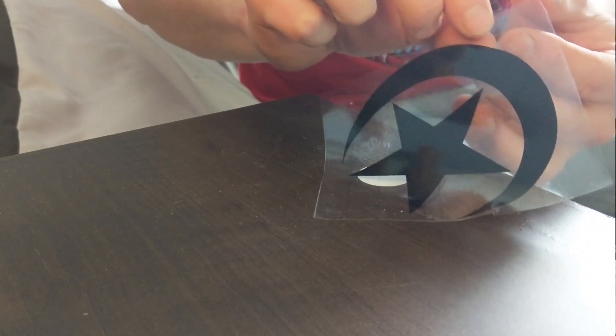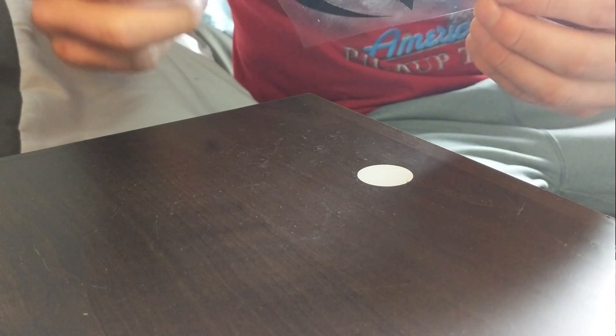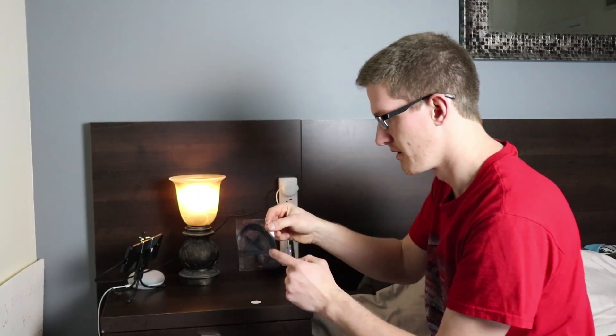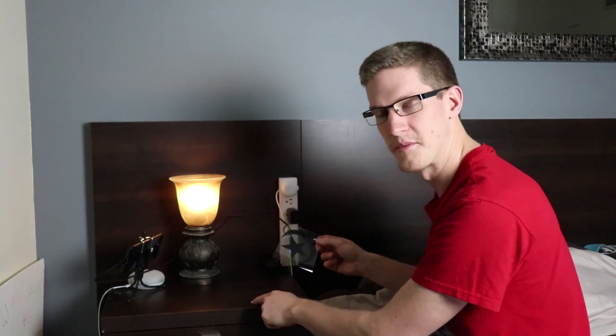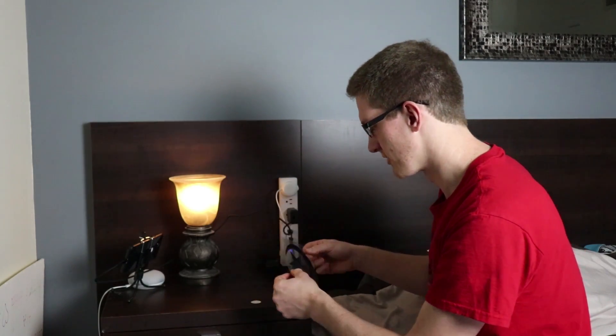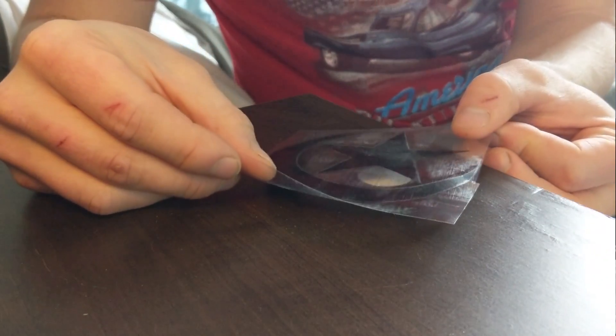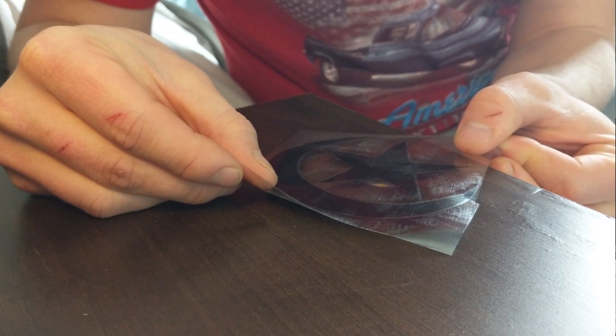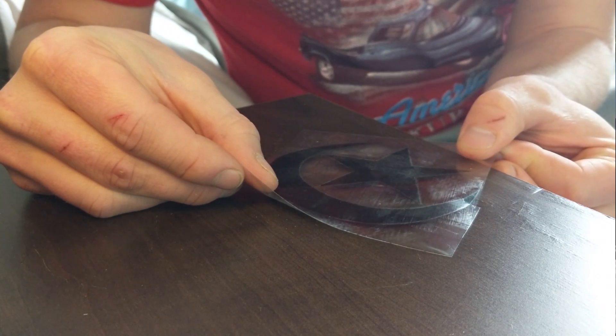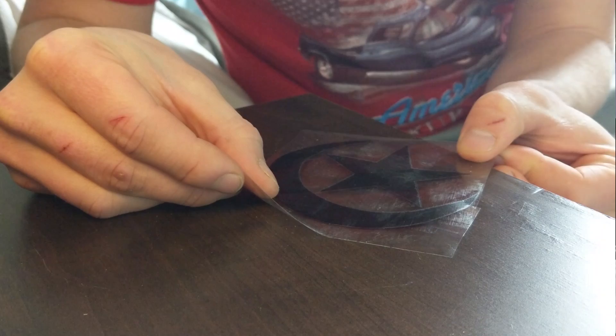Since I do have a dark nightstand, it probably would have been a better choice to go with maybe a white or a different color. I made the center of the star a little bit bigger than the diameter of the NFC sticker so that it would fit over it nicely. There's probably an eighth inch on either side of the star, so it should fit without any issues.